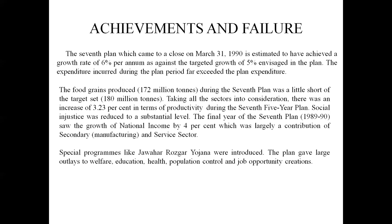We can say that the Seventh Five-Year Plan was able to achieve the hidden agenda of inclusiveness in the economy through improvement of the education sector, the health sector, population control, and job opportunity creation. We can term this plan as one of the successful plans in Indian planning history, as the growth rate was very handsome — greater than the targeted growth rate.